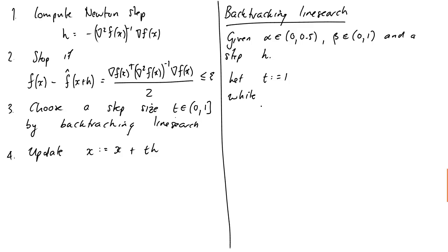Then while... So while f of x plus t h is greater than f of x plus alpha t grad f of x transpose h. We multiply t by our parameter beta. Okay, so let's just have a quick look at what this does.